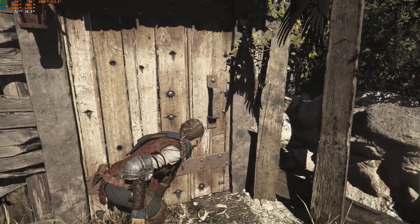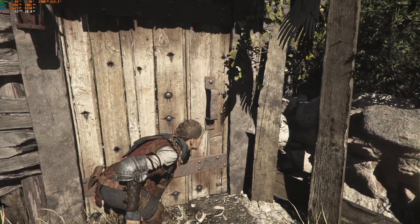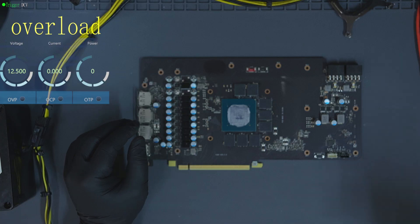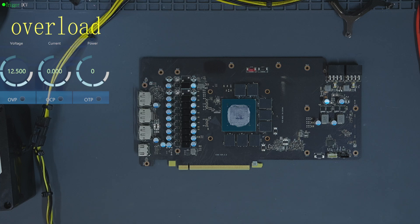GDDR6 works using something called NRZ signaling — non-return to zero. It uses two voltage levels to represent data: high for one, low for zero. It transfers two bits per clock cycle — one on the rising edge and one on the falling edge — which is why it's called double data rate. Each memory pin sends a steady stream of clean, simple signals. This makes it relatively tolerant to noise and easier to work with on a PCB. Because it's more forgiving, a small issue with one chip — like a weak solder joint or slightly delayed timing — may not stop it from booting. That's one reason GDDR6 is more preferred for reliability.